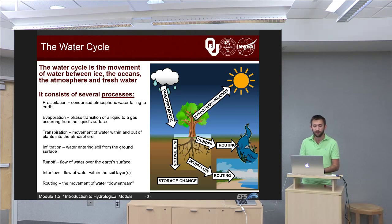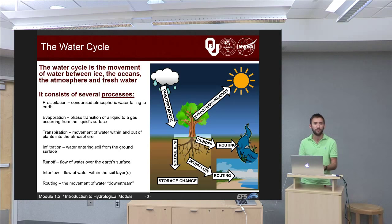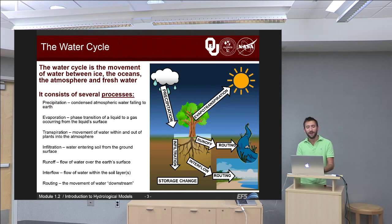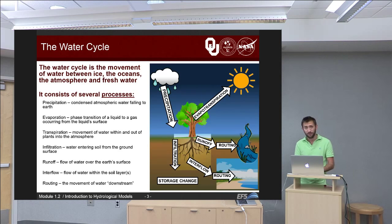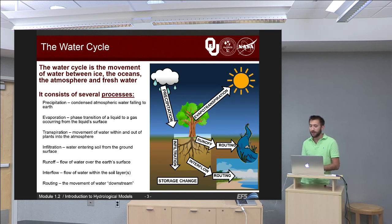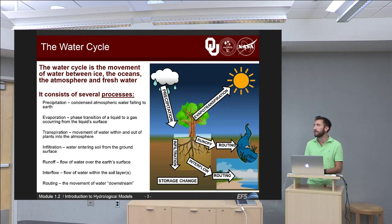Evapotranspiration involves either a phase transition of liquid to gas occurring from a liquid surface — that's evaporation, like what happens on a hot summer day when there's a rain puddle in the street. Transpiration is similar but it's the movement of water within and out of plants into the atmosphere. Infiltration is water that enters the soil from the ground surface. Runoff is the flow of water over the Earth's surface. Interflow happens inside the Earth and is the flow of water within the various soil layers. Routing is the movement of water downstream — from small rivulets and fields into brooks, then larger streams, rivers, and eventually the ocean.